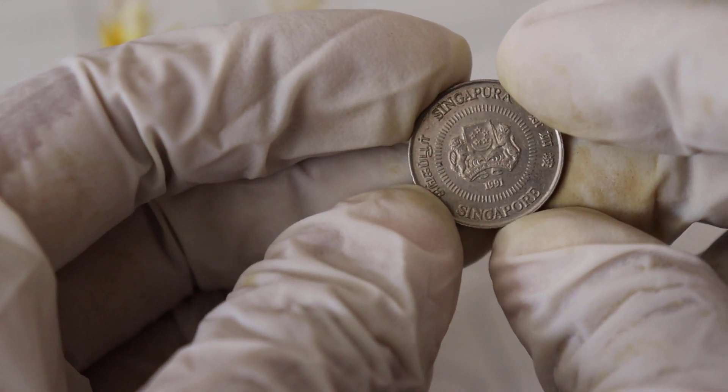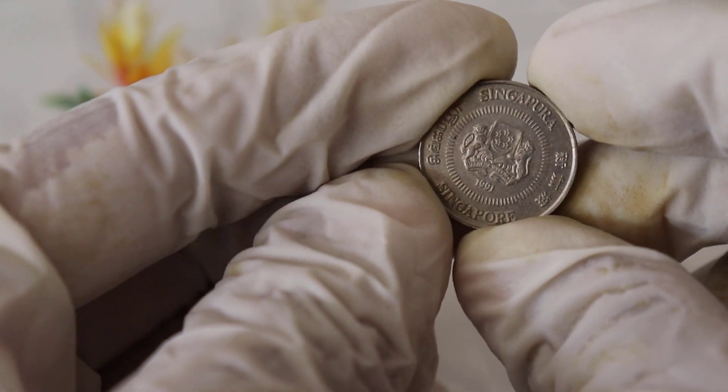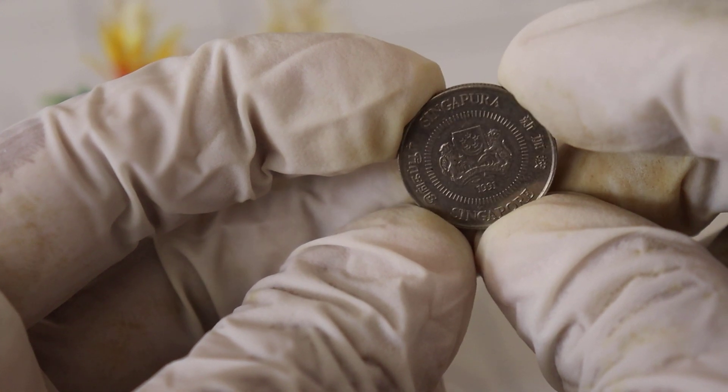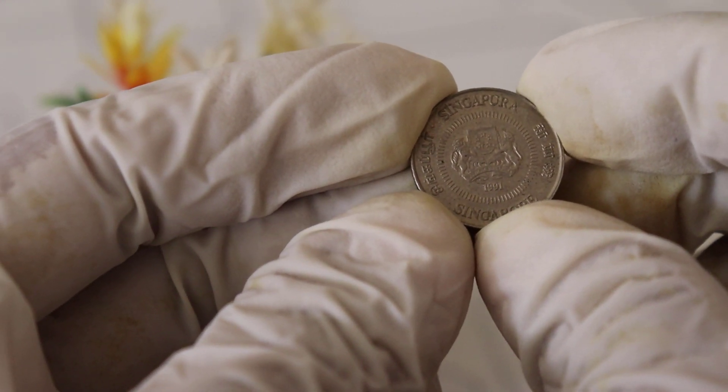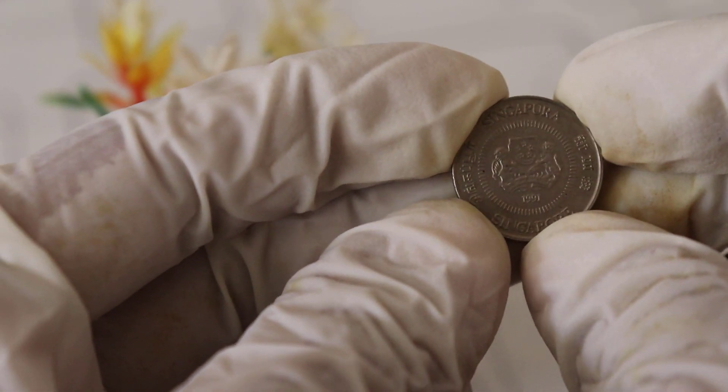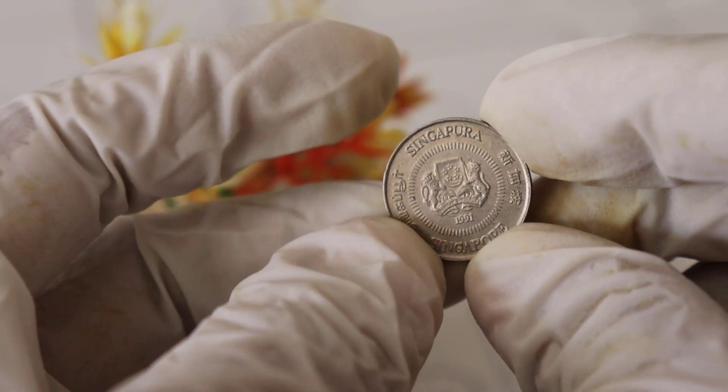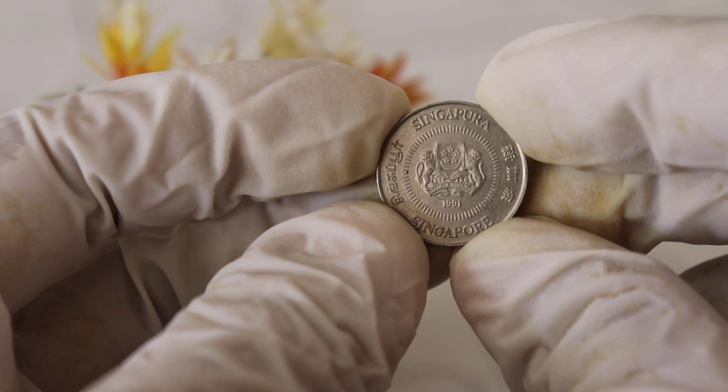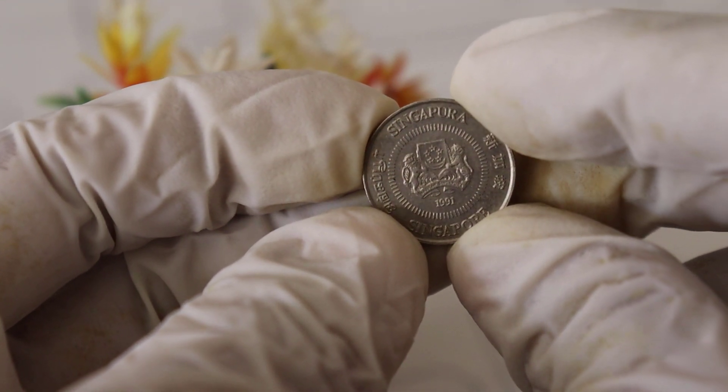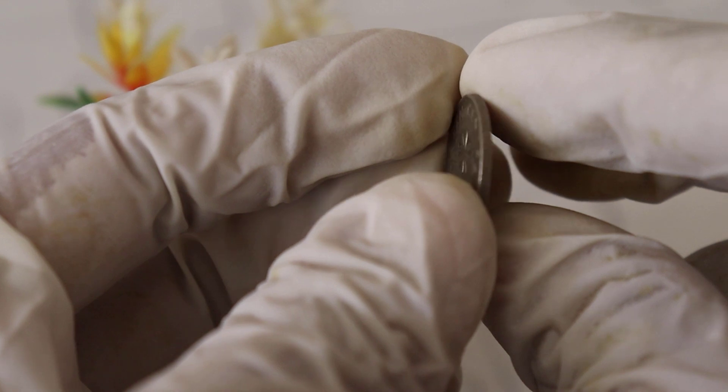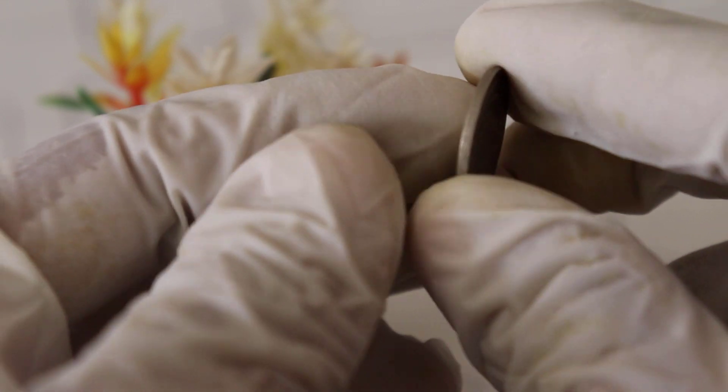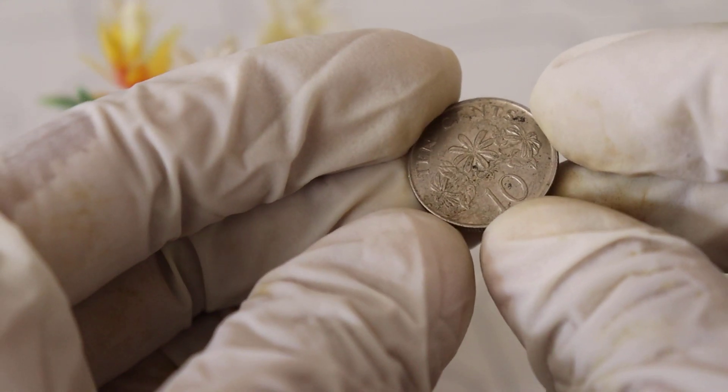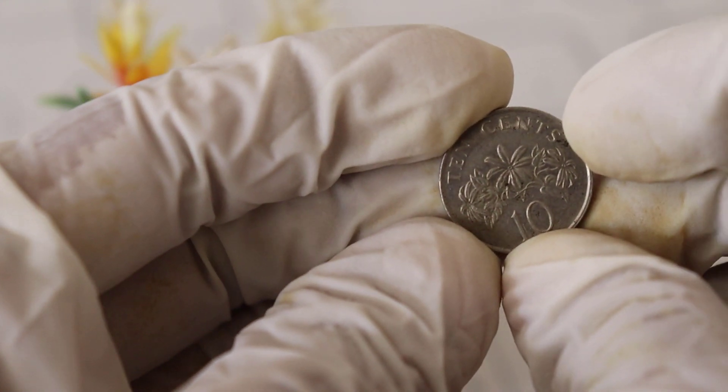First, condition: the better the condition, the higher the value. Coins with minimal wear and sharp details command a premium. Second, rarity: some 1991 Ten-cent coins may have many errors or unique characteristics, making them rarer and more valuable. Third, demand: collector demand plays a significant role. If there's a surge in interest, prices can soar.